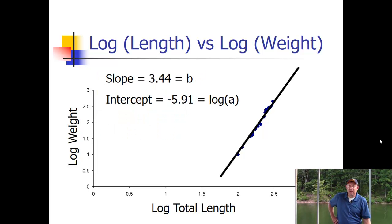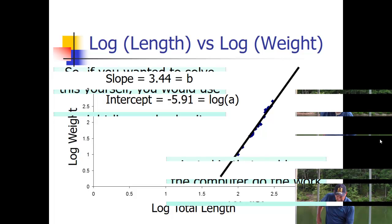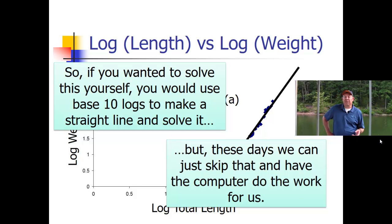When I do it to this particular example, I can get the slope of that line, and the slope is 3.44—that's b. I can see where this line intercepts the y-axis, and that's negative 5.91—that's the log of a. So if I wanted to solve this by hand myself, I would just take the base 10 log of all the lengths and weights, make a straight line, solve for the straight line. We can do that, but we can also just have the computer do this super quickly.